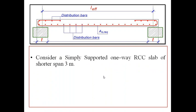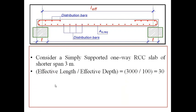Let me consider a simply supported one-way RCC slab whose shorter span is 3 metres. So L effective is 3 metres. Let its effective depth be 100 mm — that is, the depth from the top up to the centre of the tension reinforcement. Therefore, the effective length by effective depth ratio is 3000 mm divided by 100 mm, that is 30.